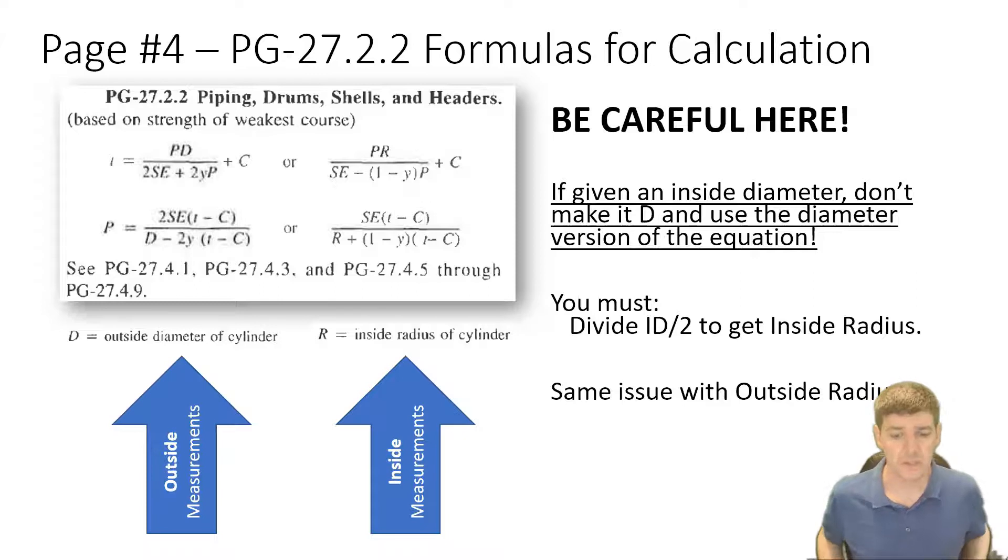So a really common error is that you're given an inside diameter of a drum or something like that, and so you see diameter and you grab the diameter version of the equation. But no, no, no, that's not right. You have to look at it. Do I have inside measurements or do I have outside measurements? So if you have, say for instance, your inside diameter, divide it by two and get your inside radius, and that applies to the equations on the right hand side. Your other option, I guess, would be to take your inside diameter and add two thicknesses, but that's no use to you if what you're trying to do in the question is figure out your thickness. So it's always best to arrange either that radius or diameter into either the inside measurements or the outside measurements. You're going to have a really bad time if you don't realize that distinction.